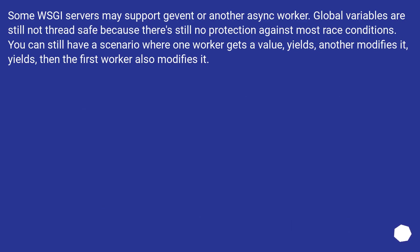Some WSGI servers may support gevent or another async worker. Global variables are still not thread-safe because there's still no protection against most race conditions. You can still have a scenario where one worker gets a value, yields, another modifies it, yields, then the first worker also modifies it.